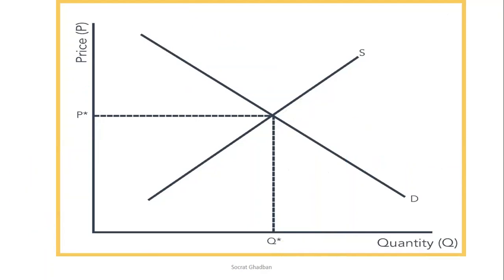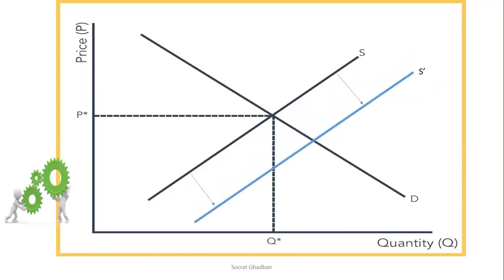We're having also a second example. Here, we're having a new technology that was implemented in a certain production process. As we know, new technology means more production, and it's a non-price determinant of supply. This is why we will have a shift in the supply curve from S to S prime. Here, also, if the price won't change and it will stay at P-star, the initial price of equilibrium, the quantity supplied, Q-S prime, will be greater than the quantity demanded. So we will have a surplus.